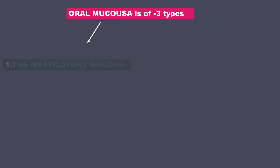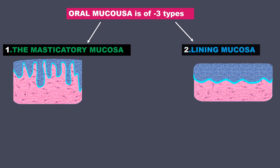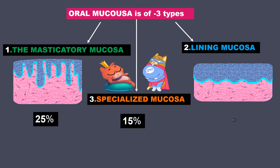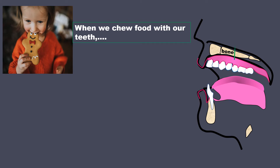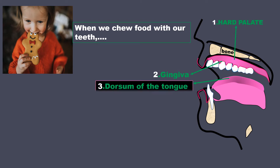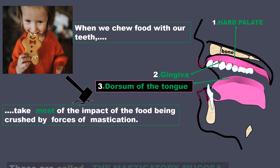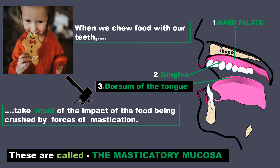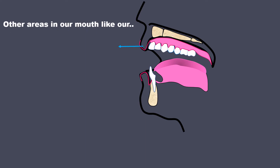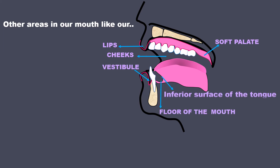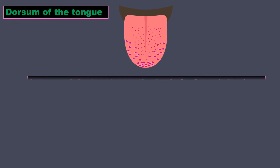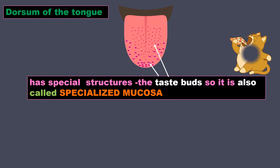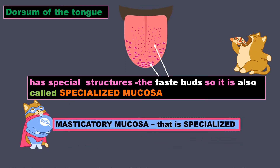Oral mucosa is of three types: masticatory mucosa, lining mucosa, and specialized mucosa, forming 25%, 15%, and 60% of the total surface area respectively. When we chew food, the hard palate, gingiva, and dorsum of the tongue take most of the impact of masticatory forces — these are called the masticatory mucosa. Other areas like lips, cheeks, soft palate, vestibule, floor of the mouth, and inferior surface of the tongue are subject to lesser forces and are called the lining mucosa. The dorsum of the tongue has special structures — the taste buds — so it is also called specialized mucosa; it is a masticatory mucosa that is specialized.